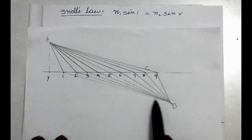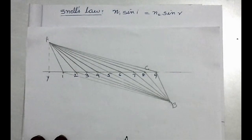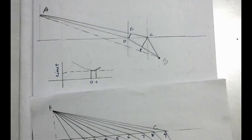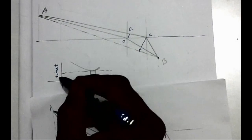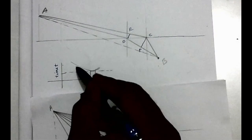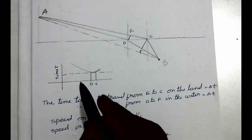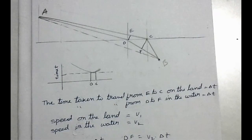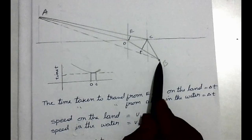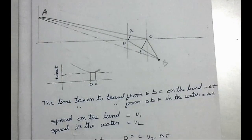From U to B there are many paths. I have taken nine points on the shoreline: a1b is one path, a2b is another, a3b another, and so on. By plotting a graph between the time taken to reach from U to B through different paths along the y-axis and the distances along the x-axis, we get a curve. From this graph, there are two points C and D such that the time taken to reach B through path ACB and path ADB are the same.